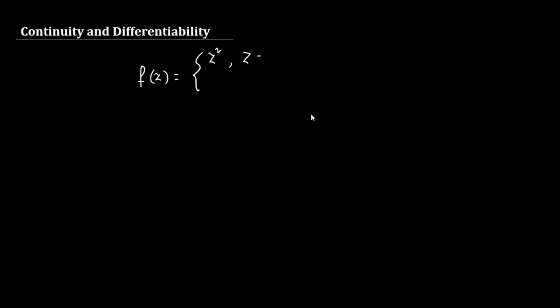If you have not watched that, the link is in the description below. Let us start with the function f(z) = z² when z ≠ i, and f(z) = 0 when z = i. In my previous video on limits of a function of a complex variable, I showed you that the limit as z tends to i of f(z) equals minus 1.